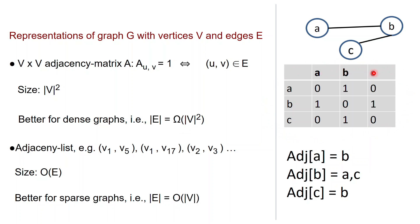Here is the adjacency matrix for our example with three nodes A, B, C. A does not have an edge to itself, so zero; A has an edge to B, so one; A does not have an edge to C, so zero. B has an edge to A, so one; B has no self-edge, so zero; B has an edge to C, so one. C has no edge to A, so zero; C has an edge to B, so one; C has no self-edge, so zero.